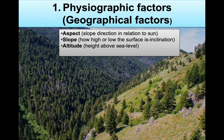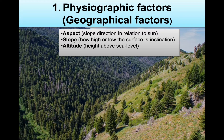The first abiotic factor we will be looking at is physiographic factors. This is actually the geography of the area, and it includes factors such as aspect, slope, and altitude. Aspect is the direction in which the slope is facing in relation to the sun. Slope refers to the steepness or flatness of an area. Altitude refers to the height above sea level, and this is measured in meters.